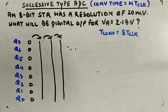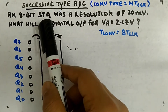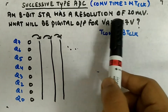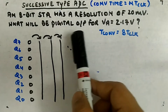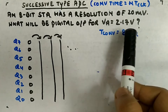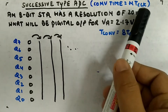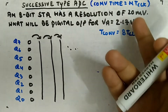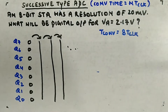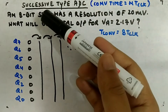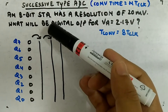Let's look at a question: an 8-bit successive approximation type analog-to-digital converter has a resolution of 20 millivolt. What will be the digital output for VA equal to 2.17 volt? The input is given to you — resolution is 20 millivolt — and it is asking for the digital output for this 8-bit successive approximation type ADC.